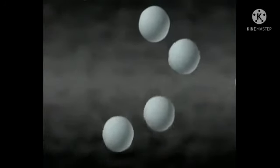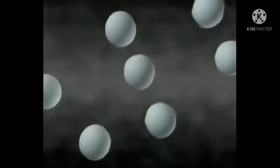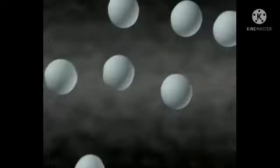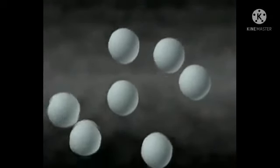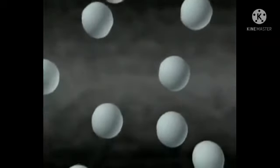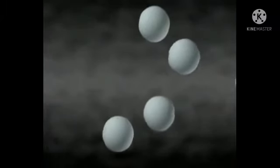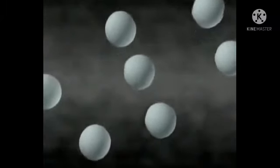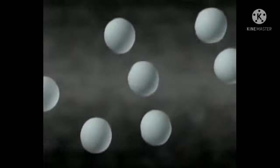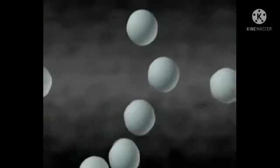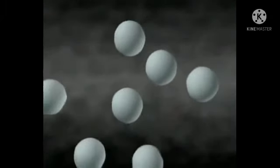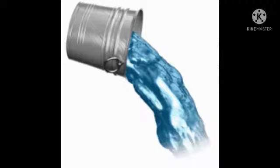For example, if we take water or any liquid and change it from one container to another container, then its quantity remains the same, but the shape it takes is of whichever container it goes into. Whether you put it in a bowl, whether you put it in a glass, the water will take the shape of the glass. In this way, any liquid does not have a fixed shape. Liquids have more intermolecular space than solids. That is why liquids can flow.